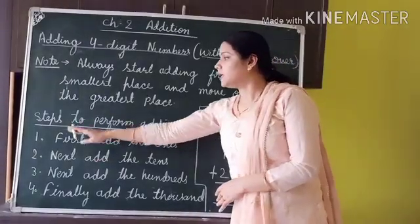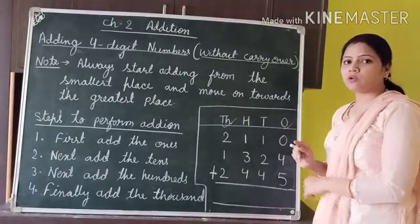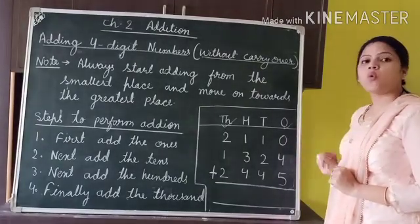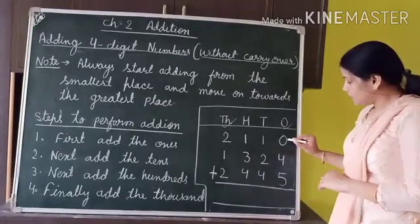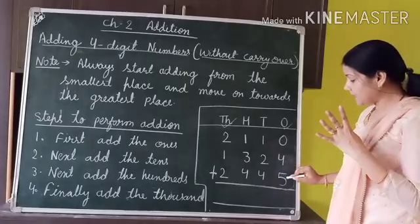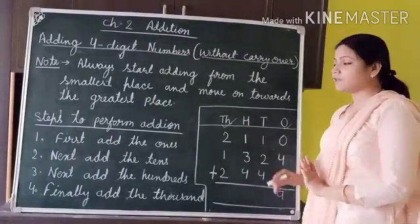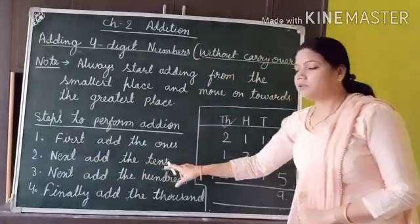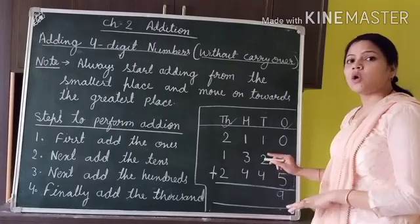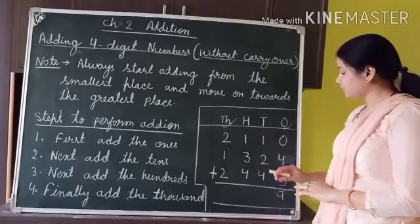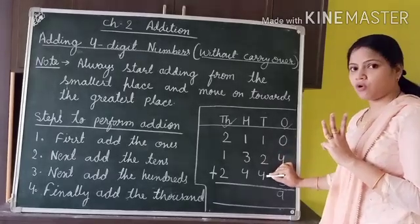Now here are the steps to perform addition. The first step is to add the ones. We add the digits at the ones position: 0 plus 4 plus 5 equals 9. The second step is to add the tens. We add the digits at the tens position: 1 plus 2 plus 4 equals 7.